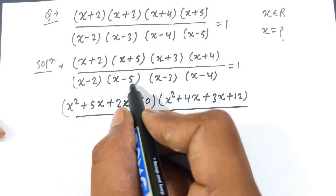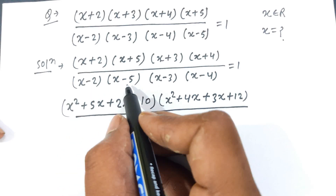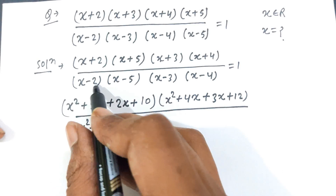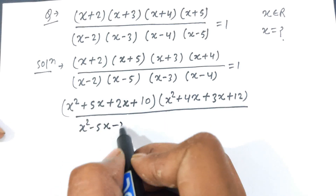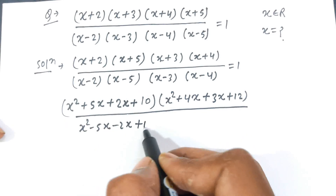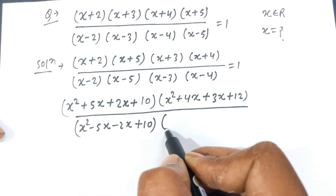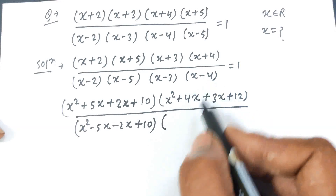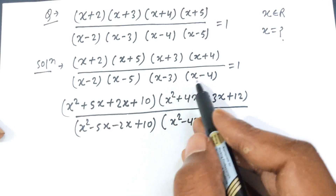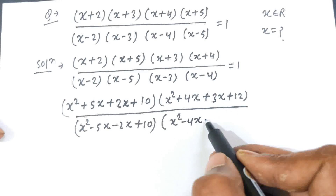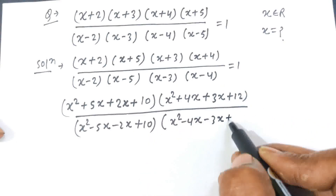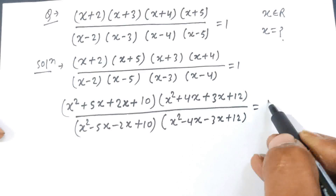Now the denominator. Multiplying (x-2)(x-5): x times x gives x², x times -5 gives -5x, -2 times x gives -2x, and -2 times -5 gives +10. Then (x-3)(x-4): x times x gives x², x times -4 gives -4x, -3 times x gives -3x, and -3 times -4 gives +12. This all equals 1.